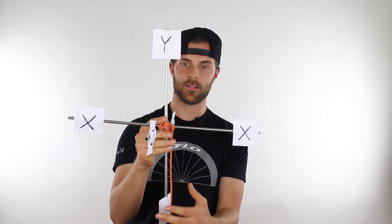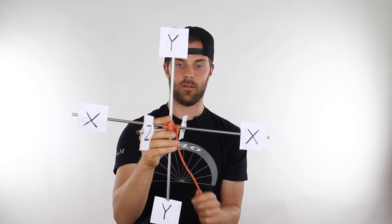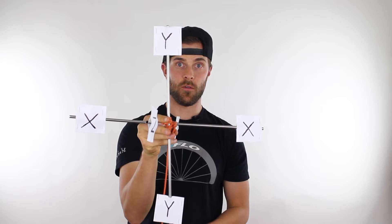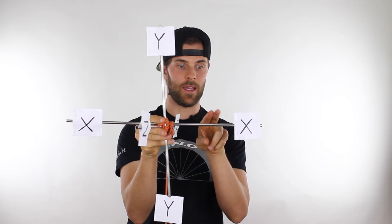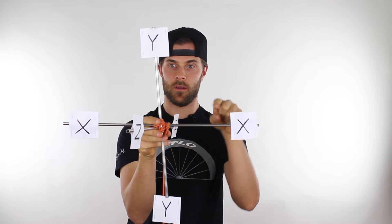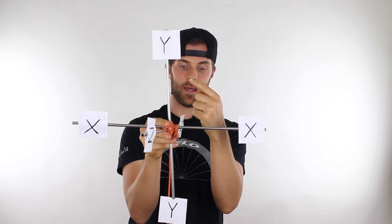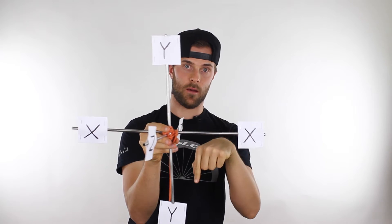What is six degrees of freedom? To explain that, I've created a three-axis system, which is what it's all based on. First thing you can do is you can move in three directions. So you have the x-axis, which means you can move side to side. You have the y-axis, which means you can move up or down.